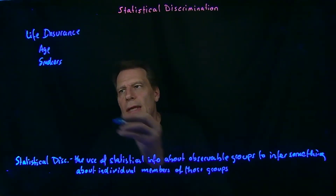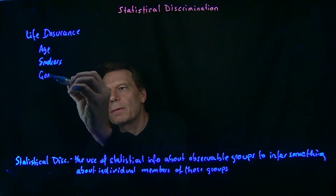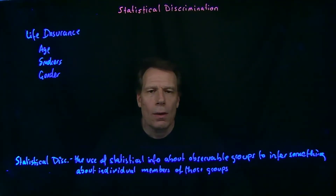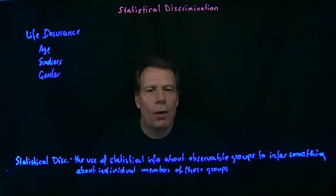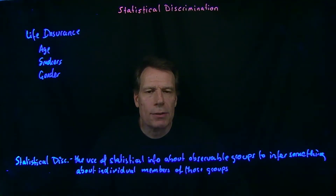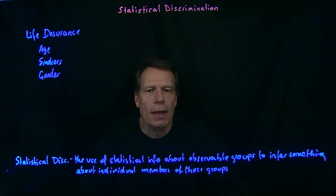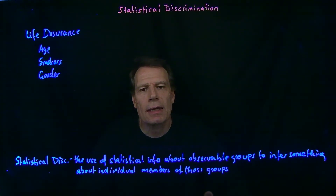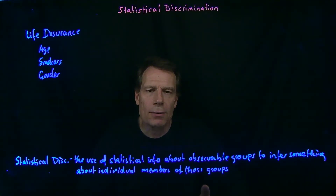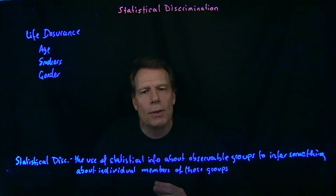And they have separate tables based on gender. Women pay lower life insurance premiums than men of a similar age, because women, on average, live longer than men. So insurance companies statistically discriminate against men, because men are statistically more likely to die earlier than women. Each of those is a case of statistical discrimination.